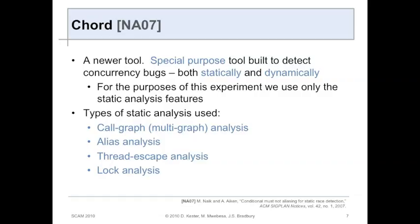Cord was the third tool used for tests. It's a newer tool, and it's built specifically for finding concurrency bugs. It uses more forms of analysis: control flow graph analysis, alias analysis, race-sleep analysis, and lock analysis. These are all forms of static analysis.